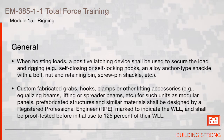Custom fabricated grabs, hooks, clamps, or other lifting accessories — for example, equalizing beams, lifting or spreader beams, etc. — for such units as modular panels, prefabricated structures, or similar materials shall be designed by a registered professional engineer, marked to indicate the working load limit, and shall be proof tested before initial use to 125% of their working load limit.